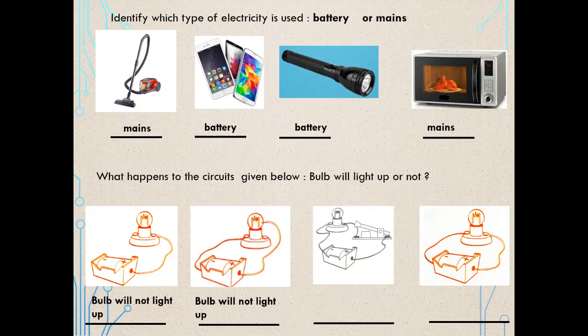Look at the next circuit — is the switch on or off? It is off, so the bulb will not light up. What about the last circuit — will the bulb light up? Yes, it will. The bulb will light up. You have done a wonderful job, children!